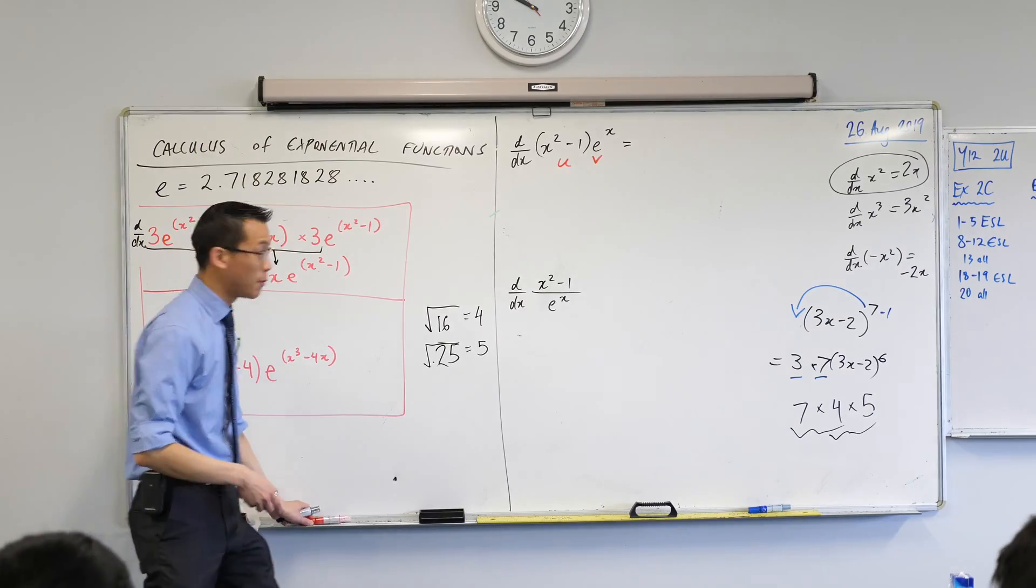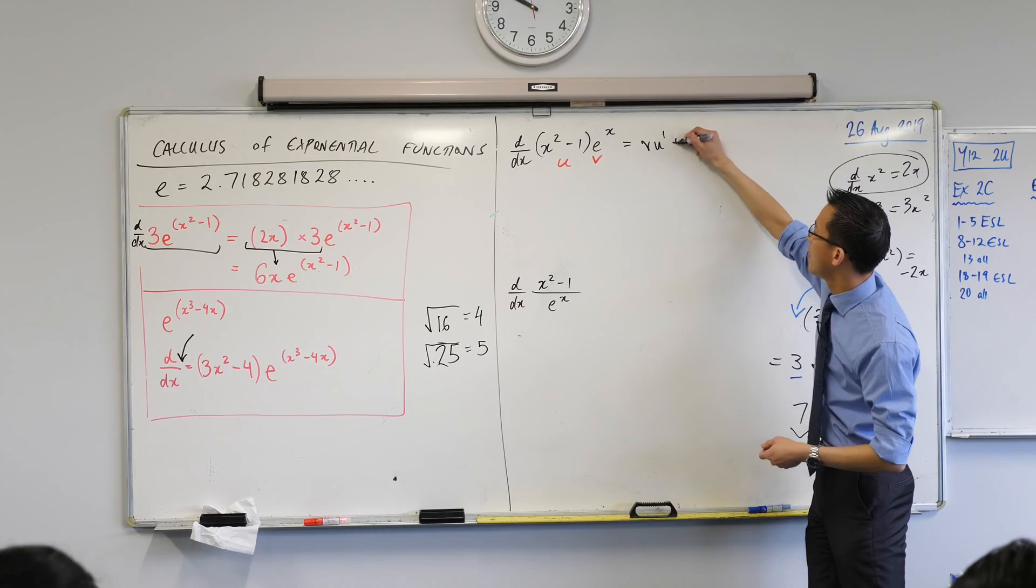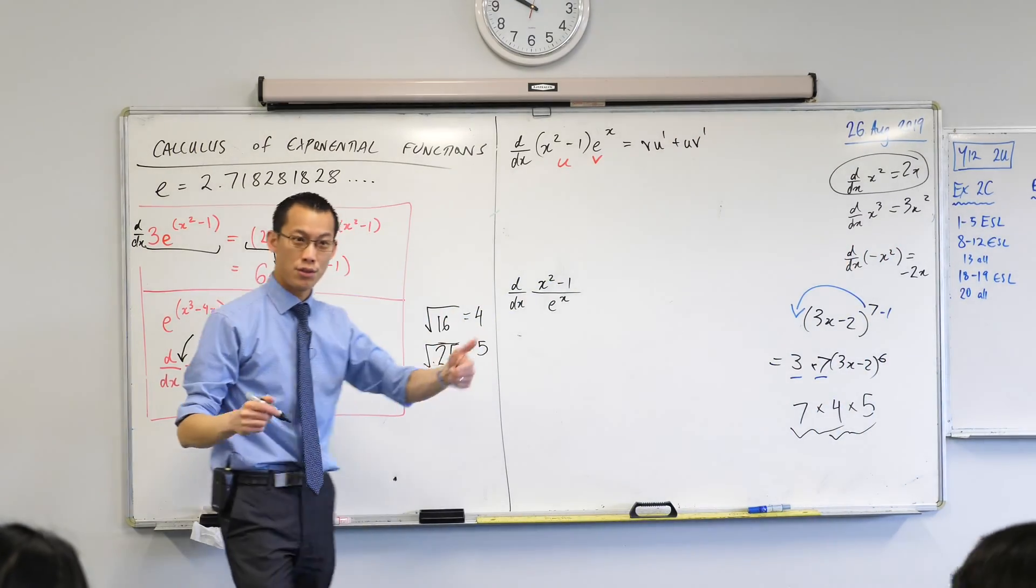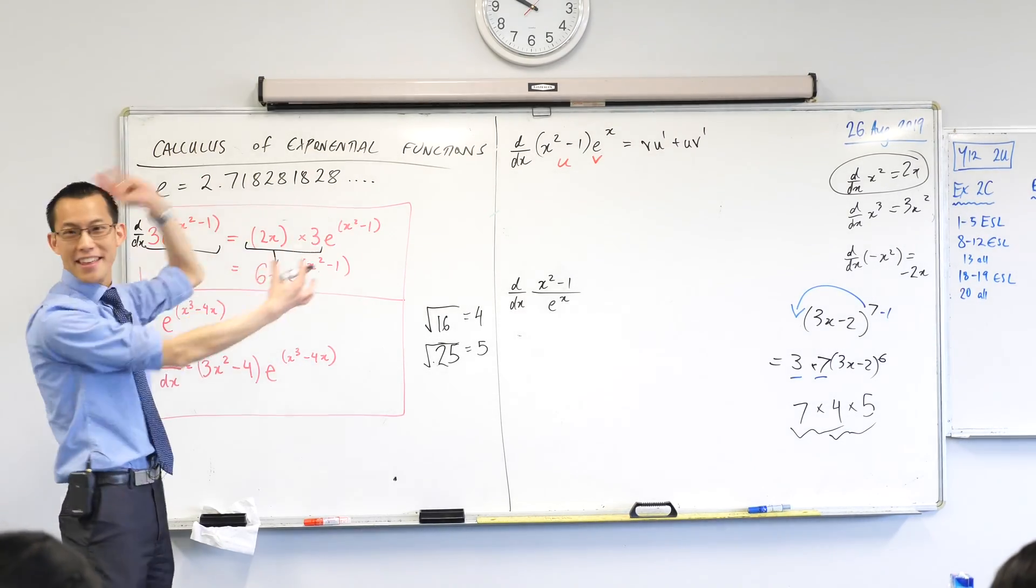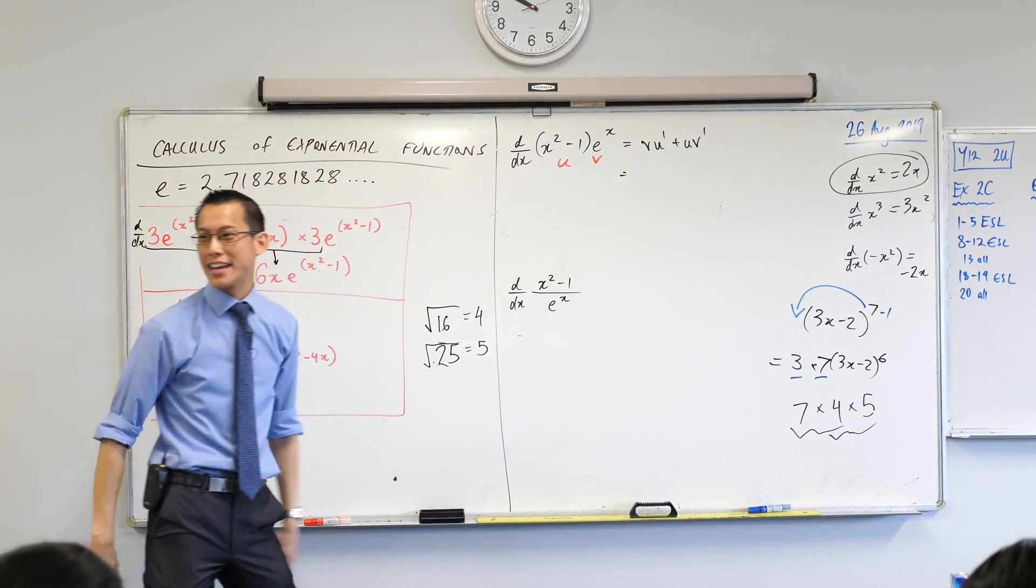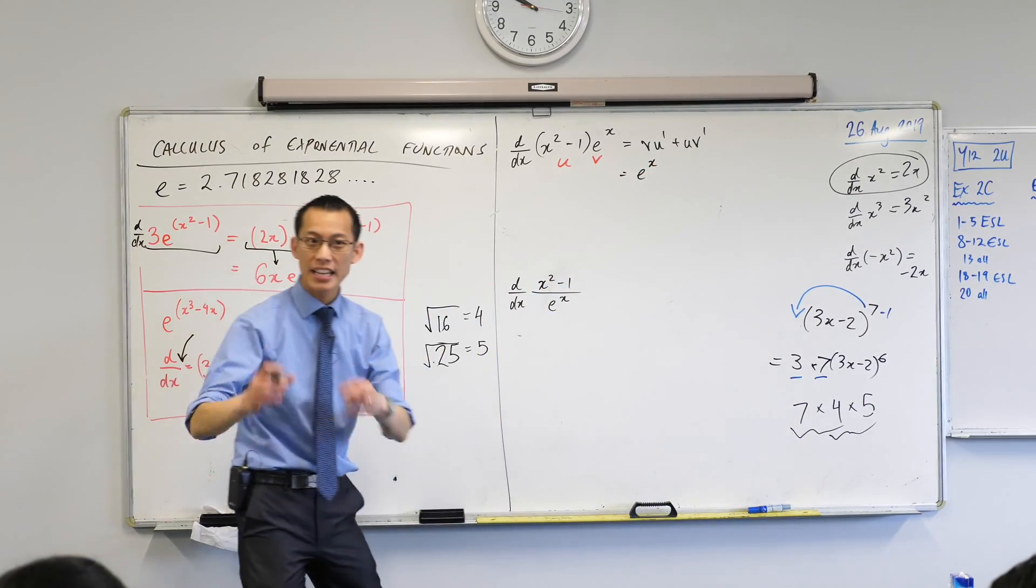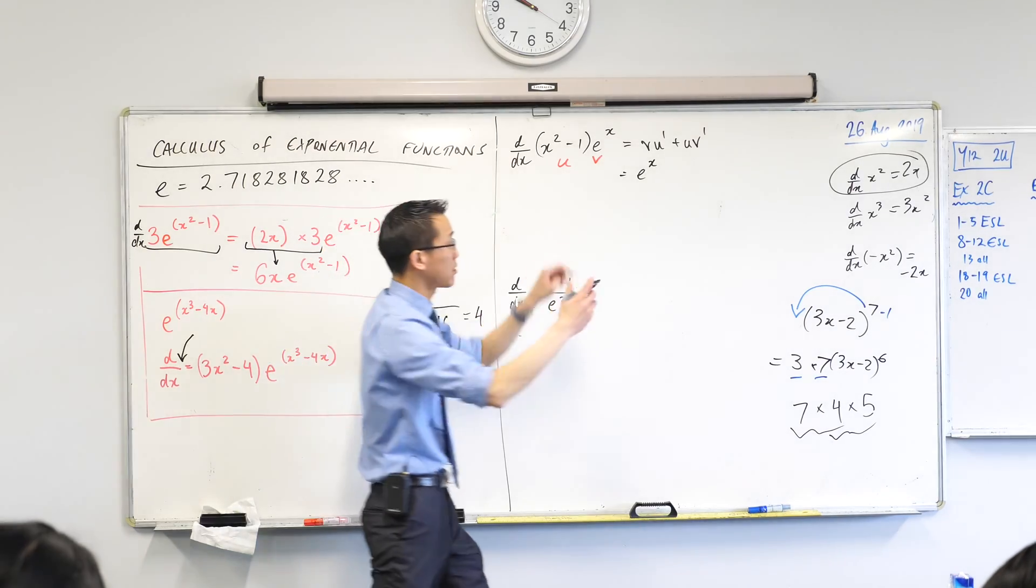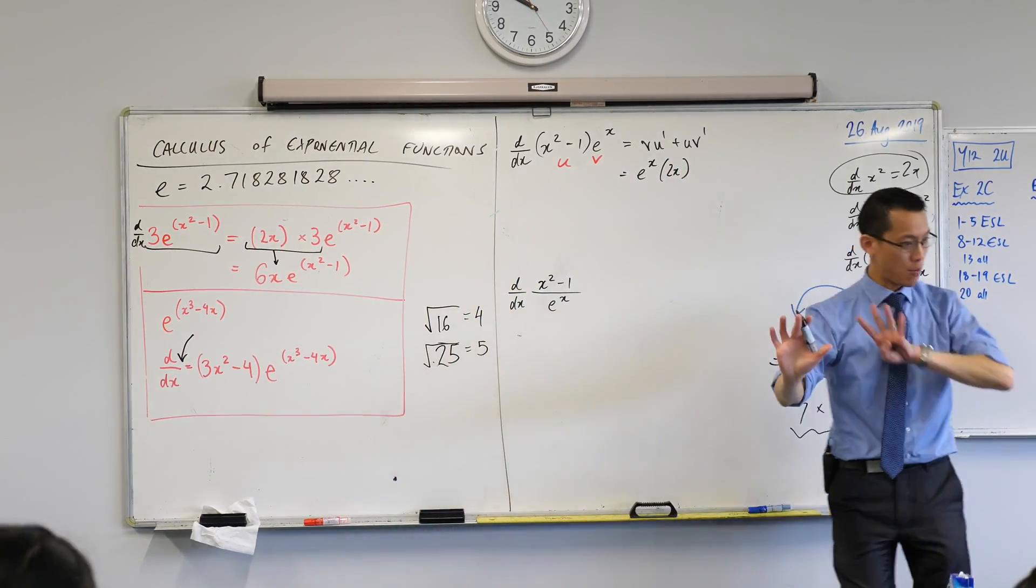In the case of the product rule, does it matter which one's which? No. It doesn't matter because you can rearrange a product and it doesn't matter which way you write it. Once you've labeled them as such, we can write the product rule in this very compact and memorable form. v, u dash, plus u, v dash, which is very easy to pronounce. I pronounce it vuv. Can we do this? What's v? What have I labeled v? E to the power of x. 2x. The next part is u dash. I'm going to differentiate this first part here, which is 2x. I'm going to write that.